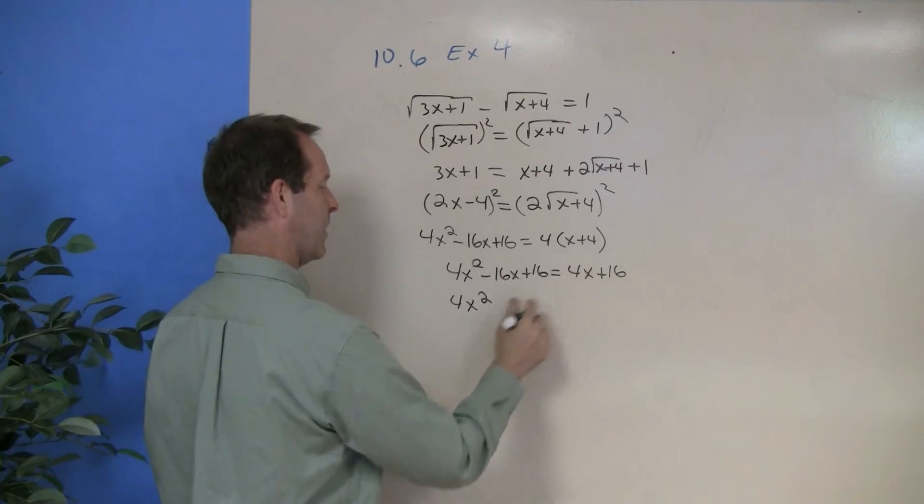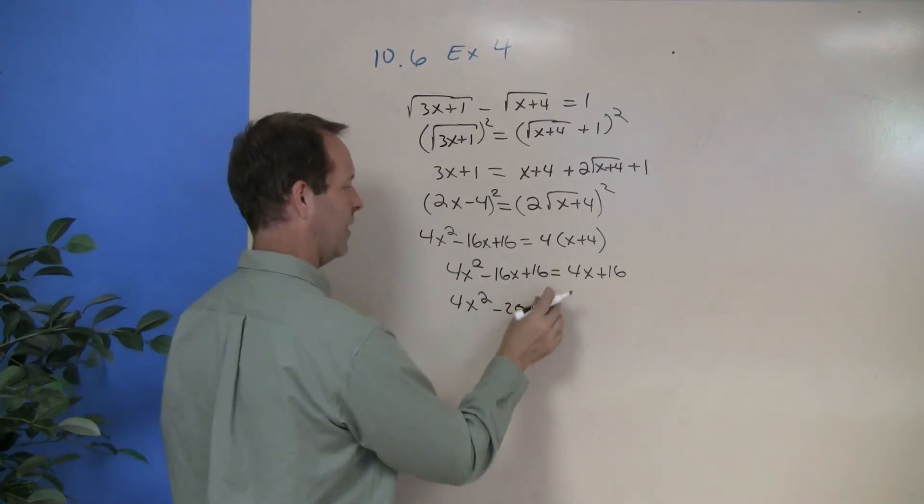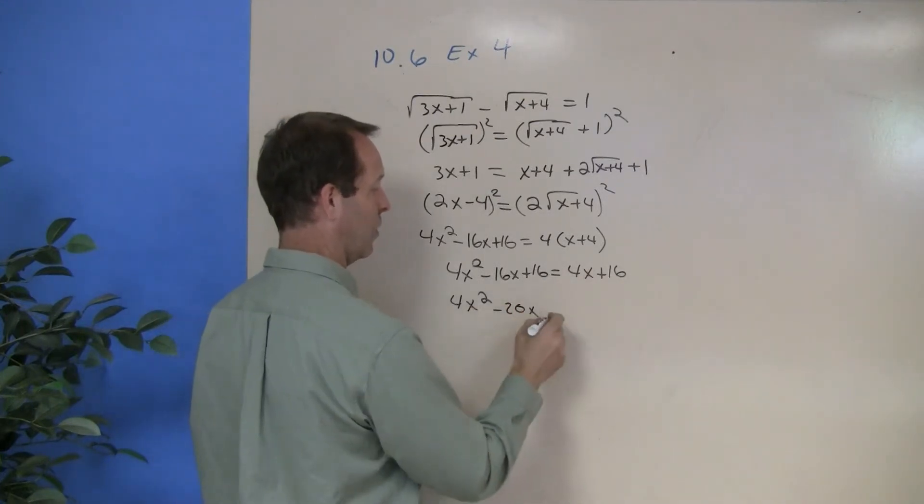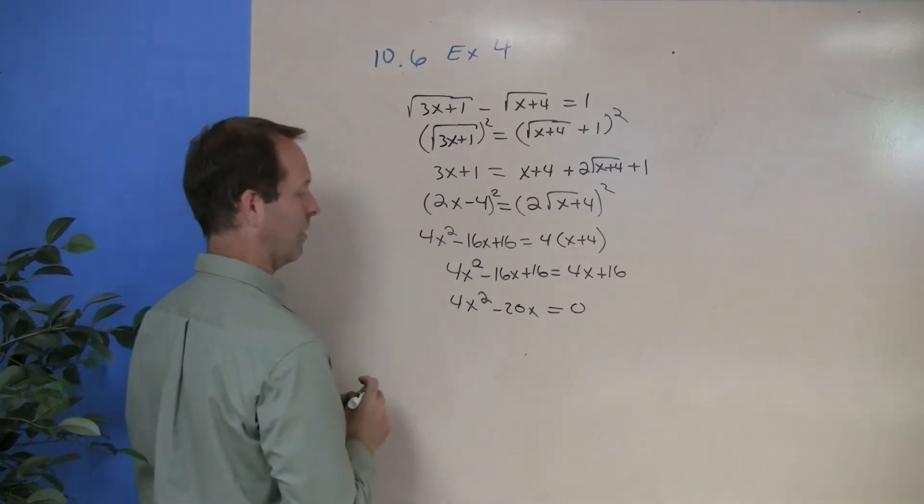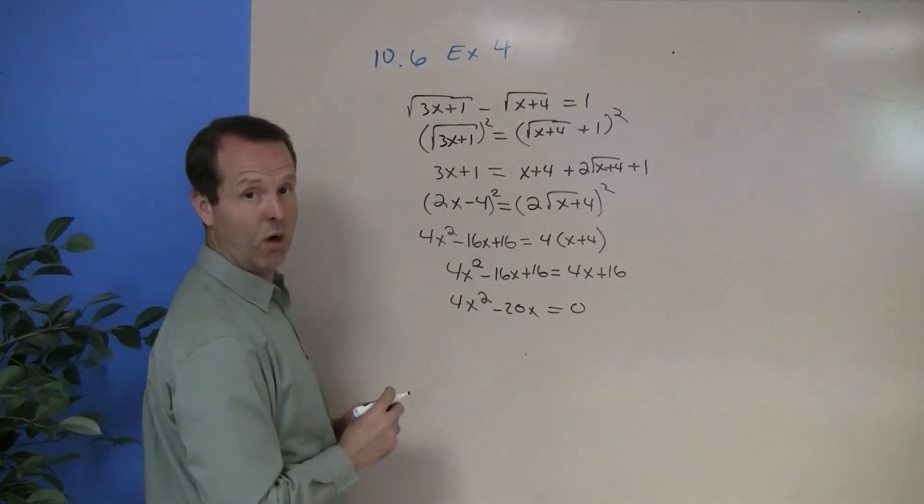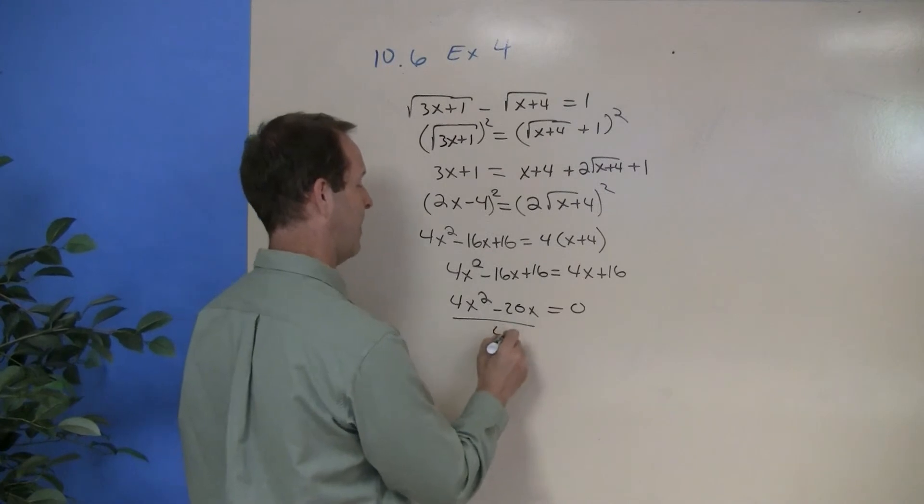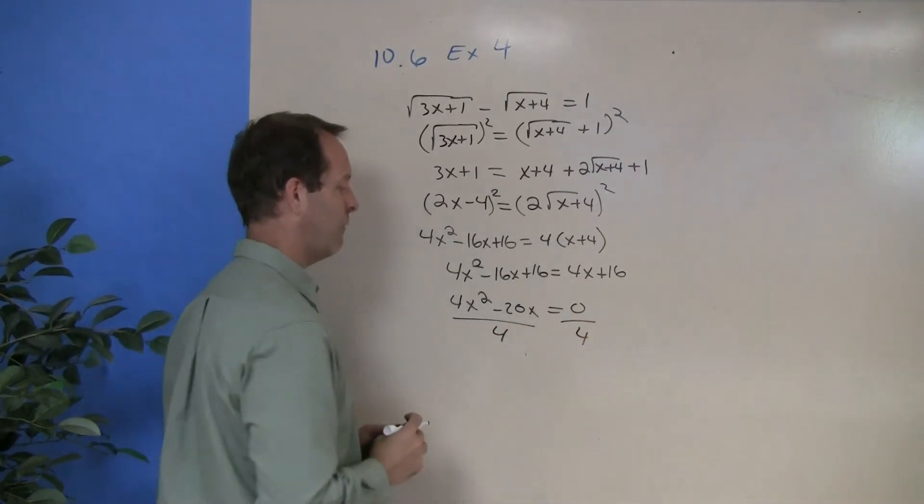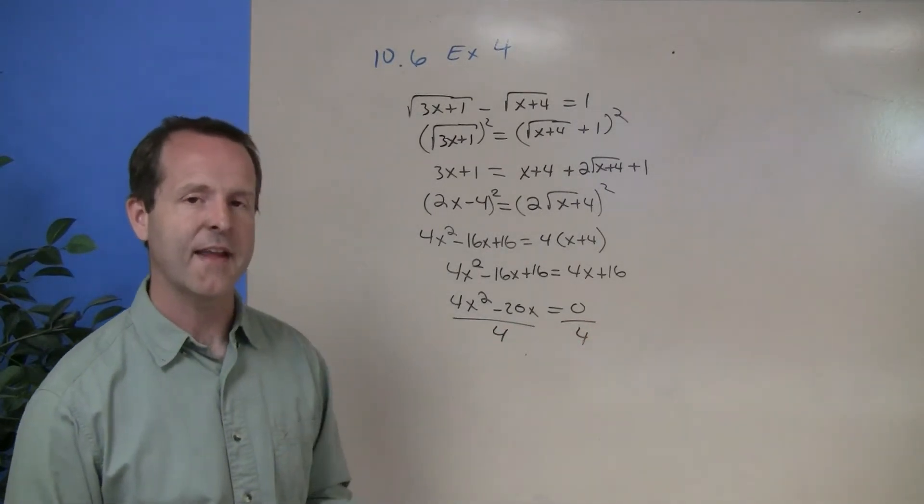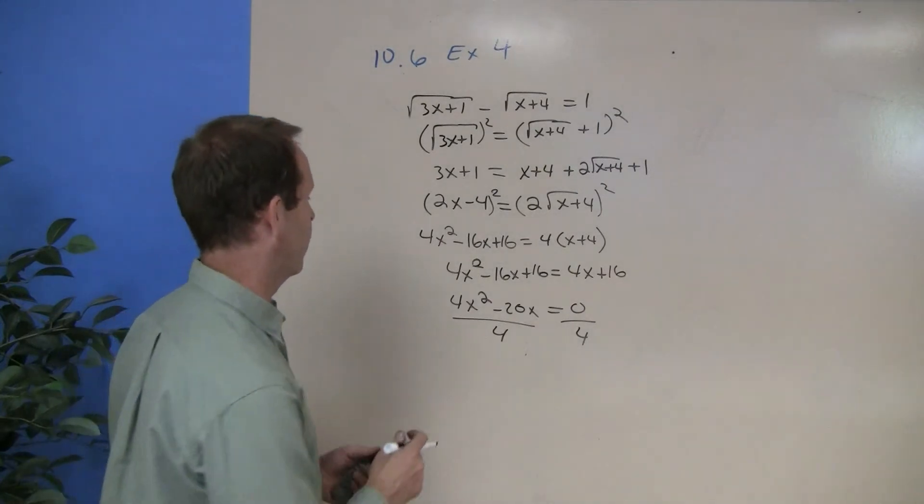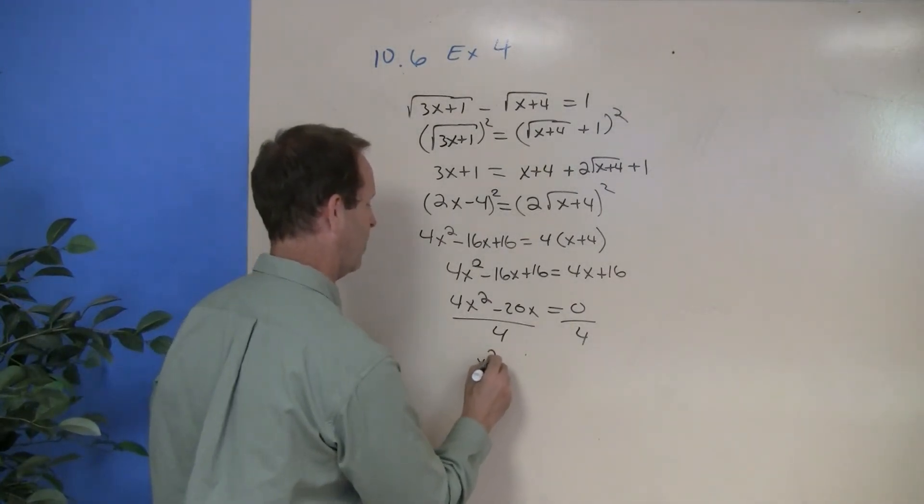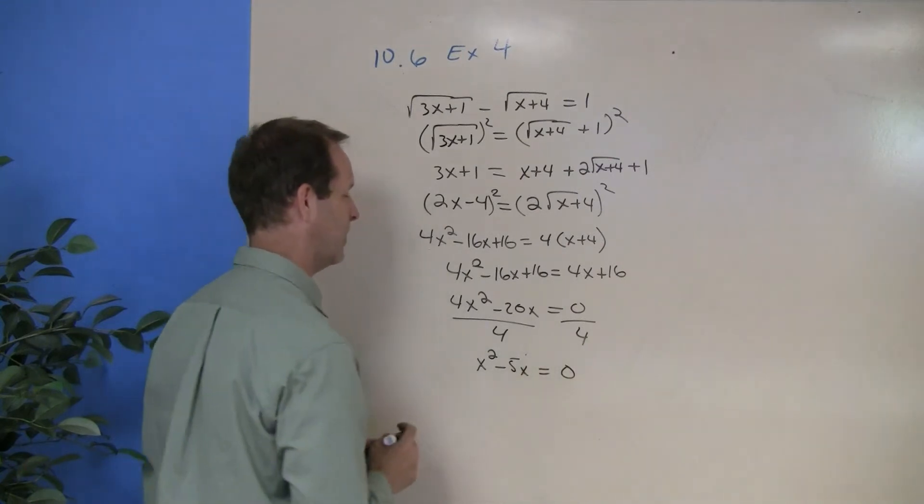Subtract 4x from both sides gives me a 20x. Subtract 16 from both sides, it goes away. I'm left with a 0. I'm going to divide everything through by 4. So I'm left with an x squared minus a 5x equals a 0.